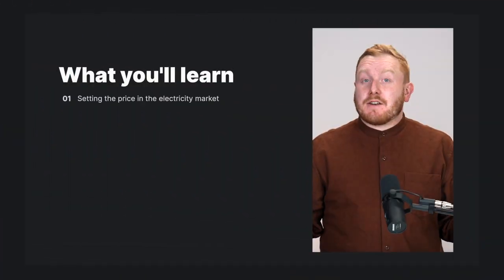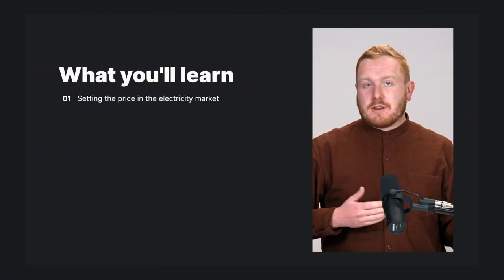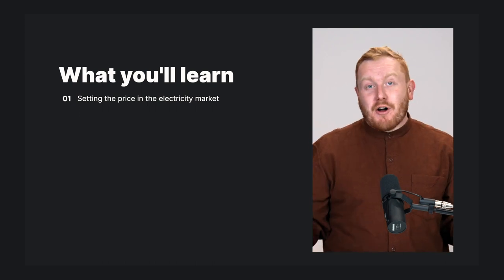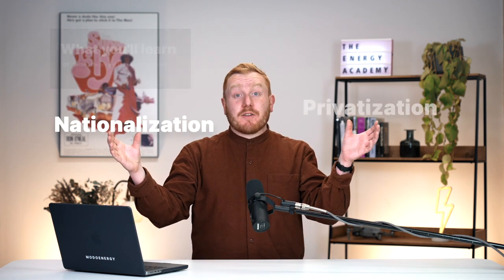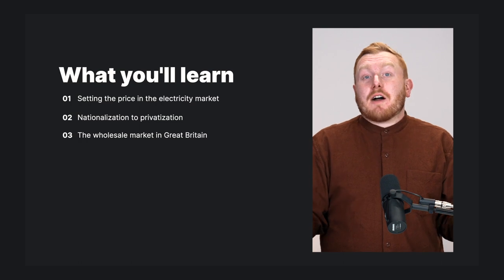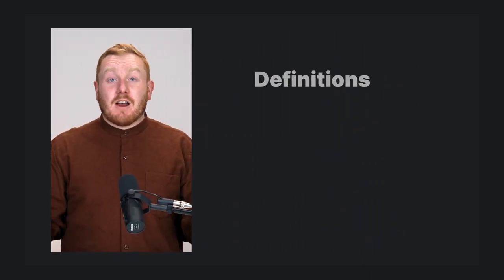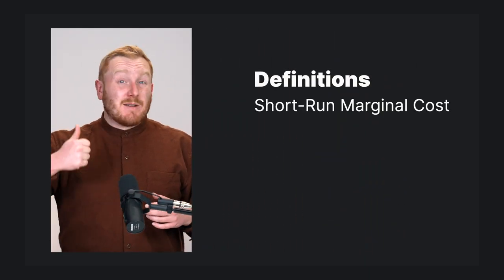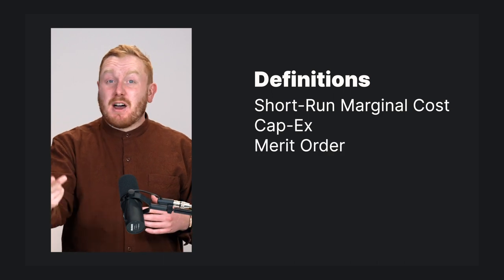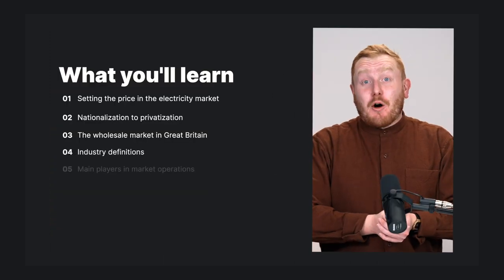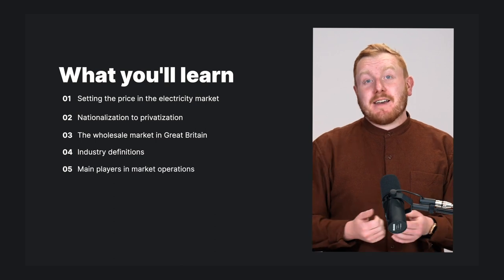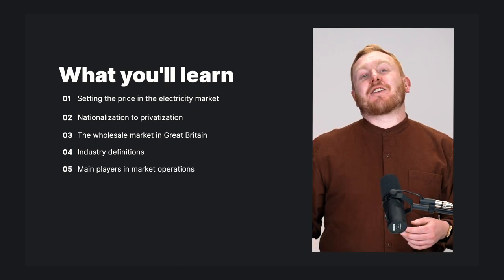By the end of the course you'll understand the conditions that go into determining or setting the price of electricity, the general evolution of electricity markets in Great Britain from nationalisation to privatisation, how the wholesale market for electricity works in Great Britain at a very high level, a whole load of super important vocabulary like short run marginal cost, capex, merit order, baseload and more, the main players involved in ensuring that the market runs smoothly, and how all those things fit together.